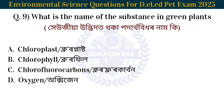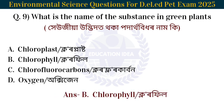Next question: What is the name of the substance found in green plants? Heoje utbita uthaka parathabidho nama ki. The answer is chlorophyll. The substance found in green plants is chlorophyll.